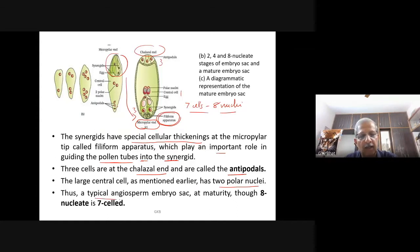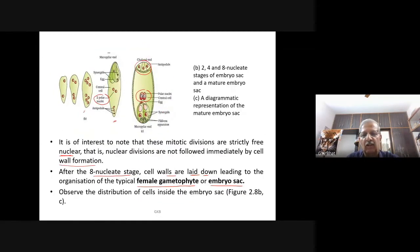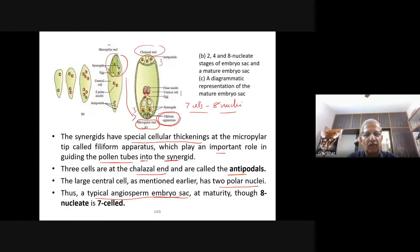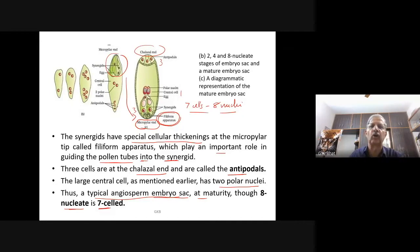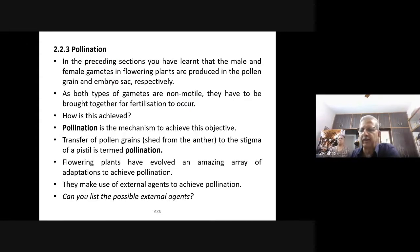A typical angiosperm embryo sac is also called the female gametophyte. Now let us look into pollination. For your information, this is a single megaspore mother cell. It undergoes meiotic division and first forms a dyad. In the second meiotic division it forms a four-megaspore tetrad. All these are haploid.